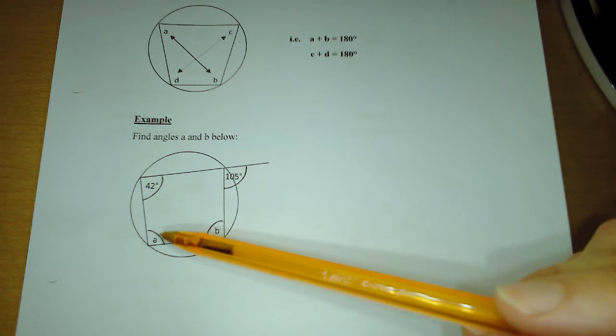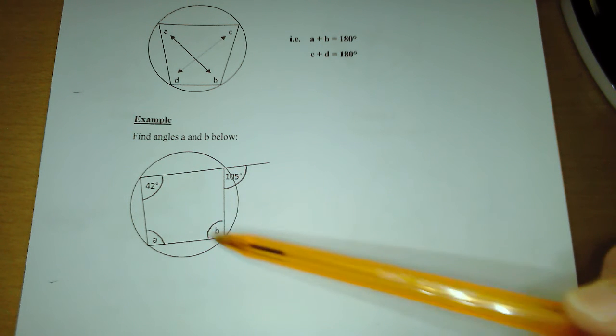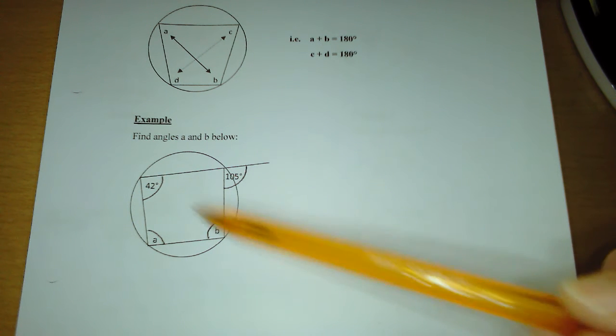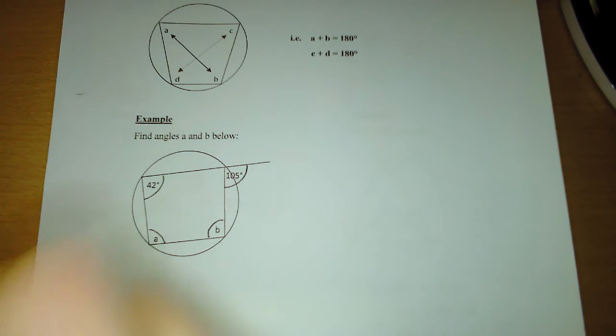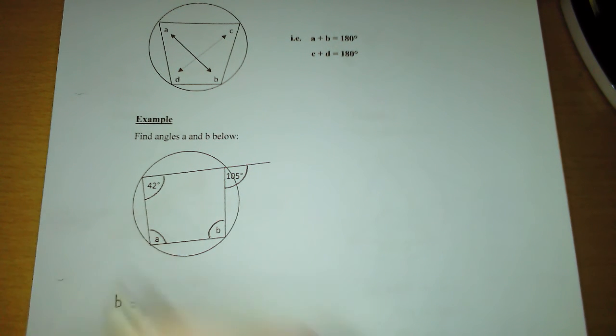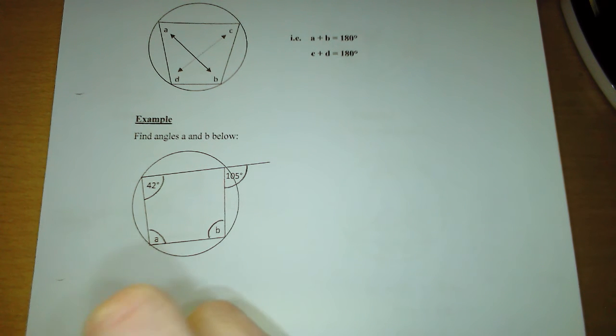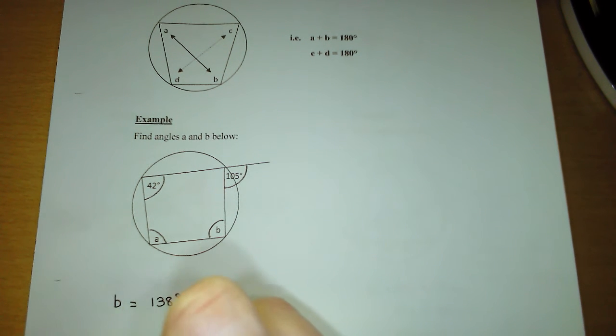So first of all, we want to get angle B. Well, B is the easy one because B and 42 are diagonally opposite, so they add up to 180. So that means that angle B is equal to 180 subtract 42, which is going to give us 138 degrees. The reason is because of ACQ, angles in a cyclic quadrilateral.